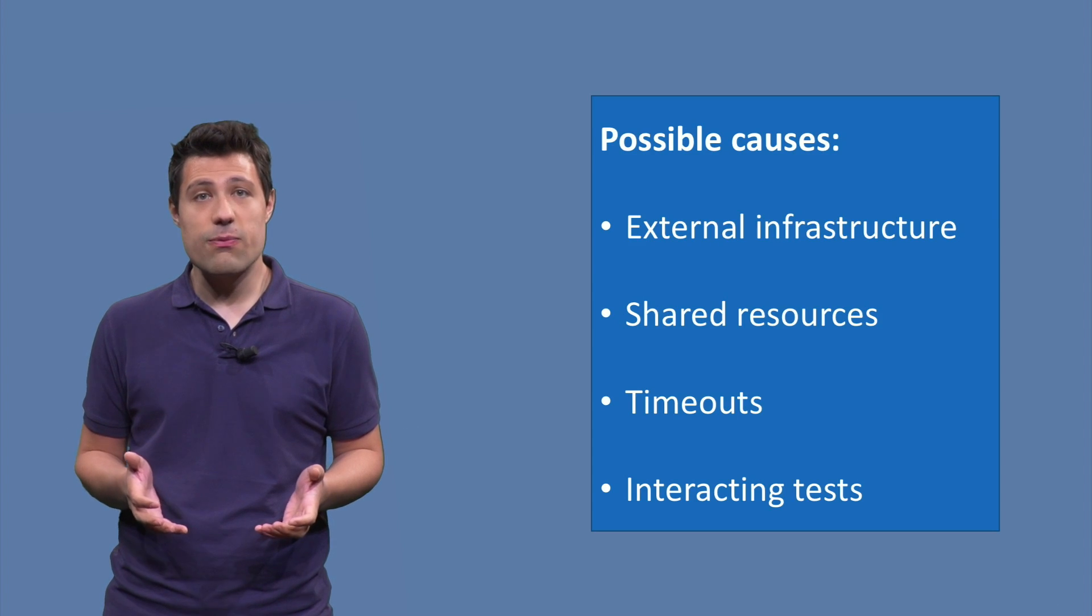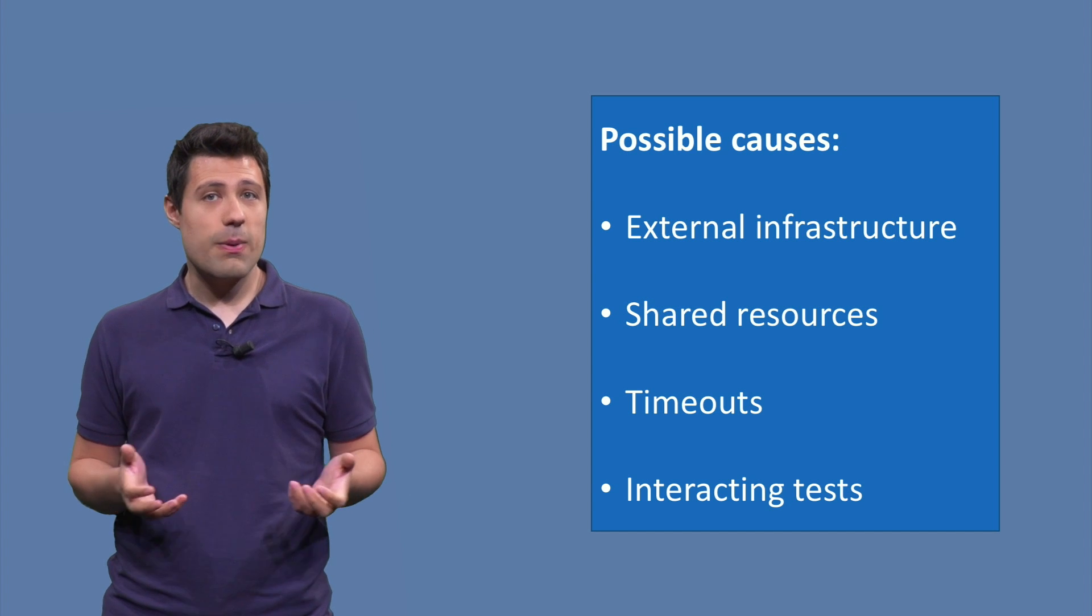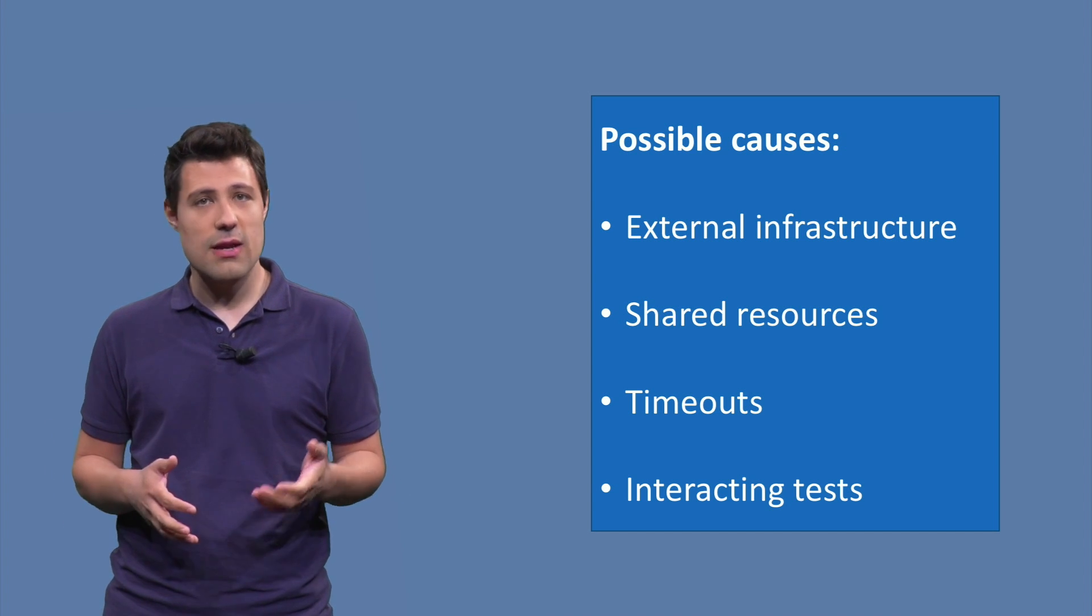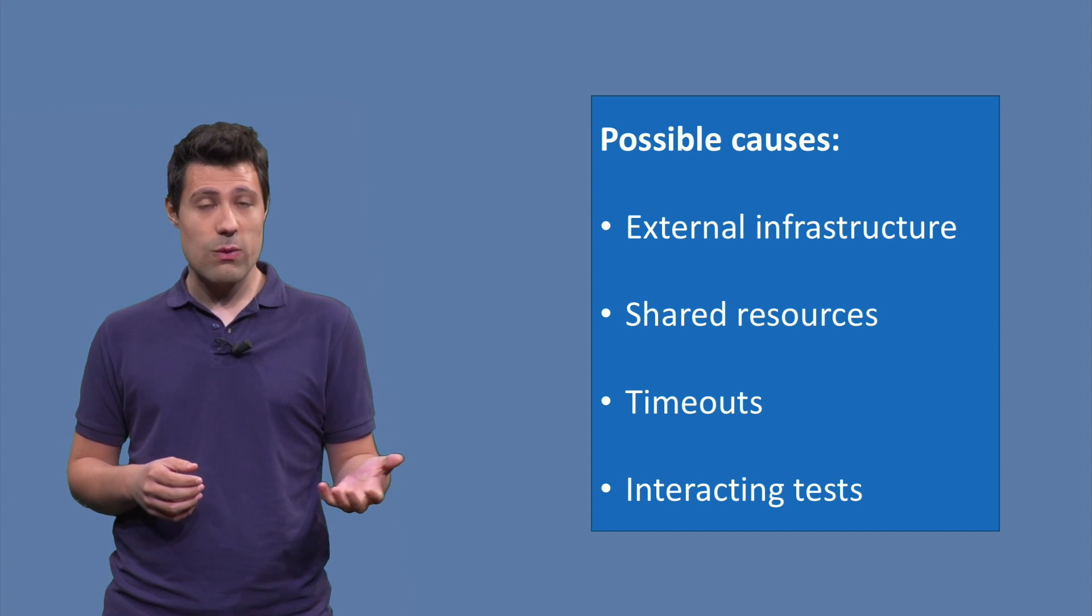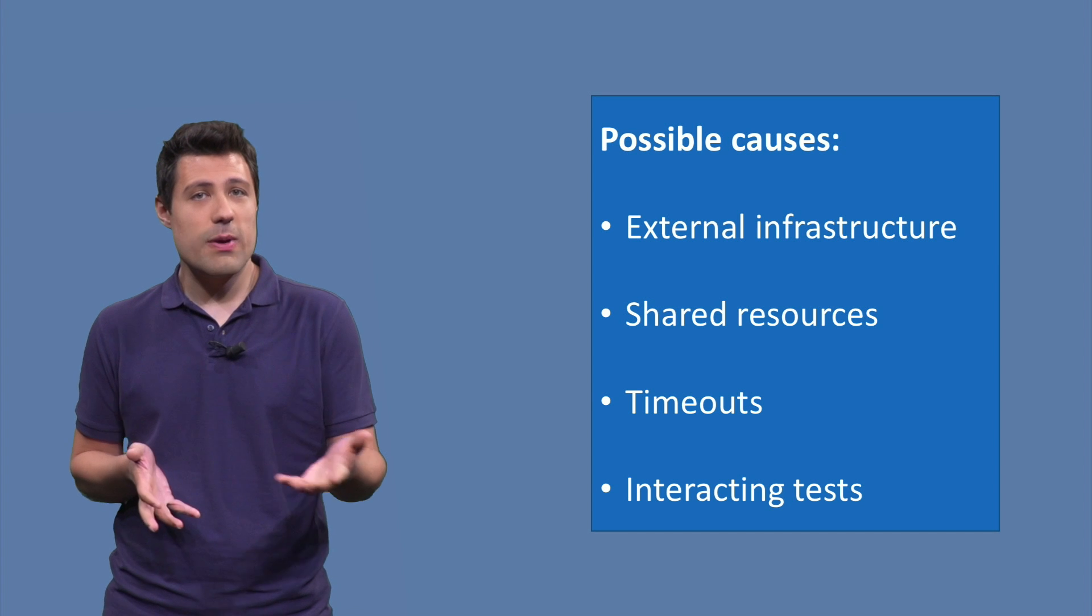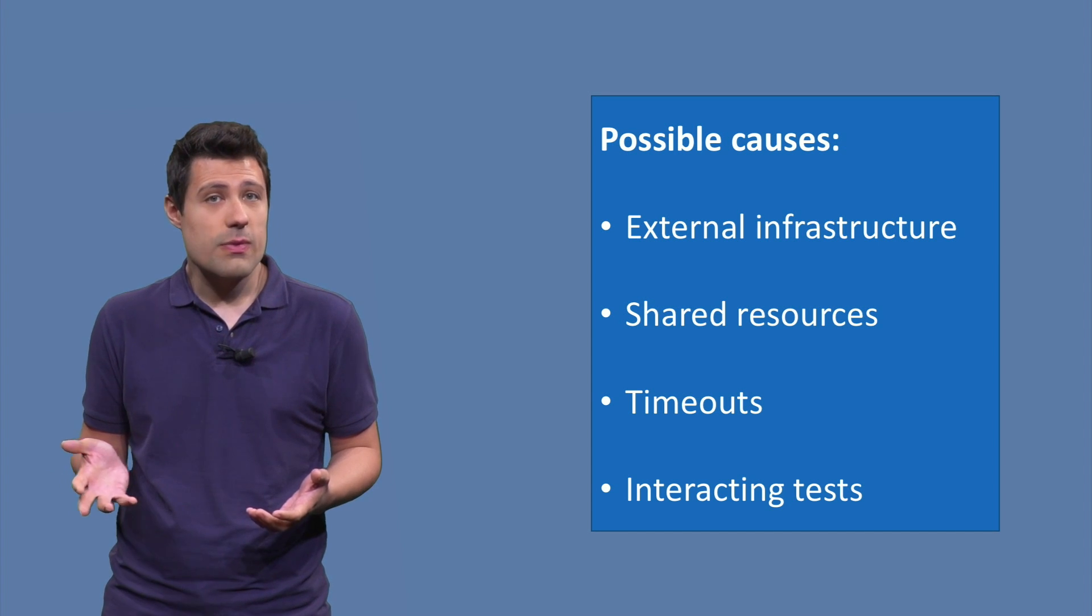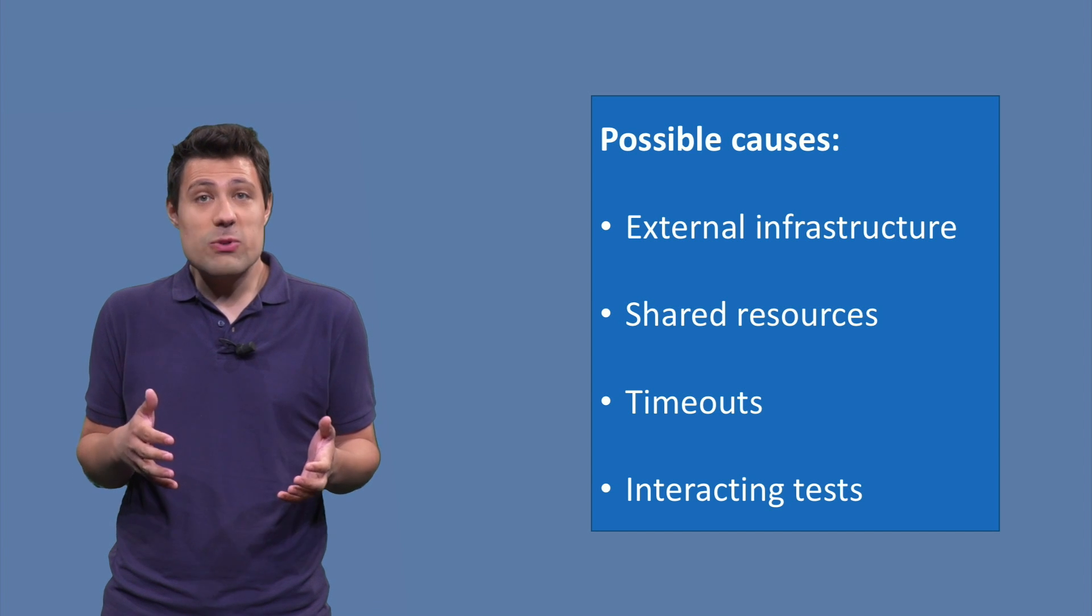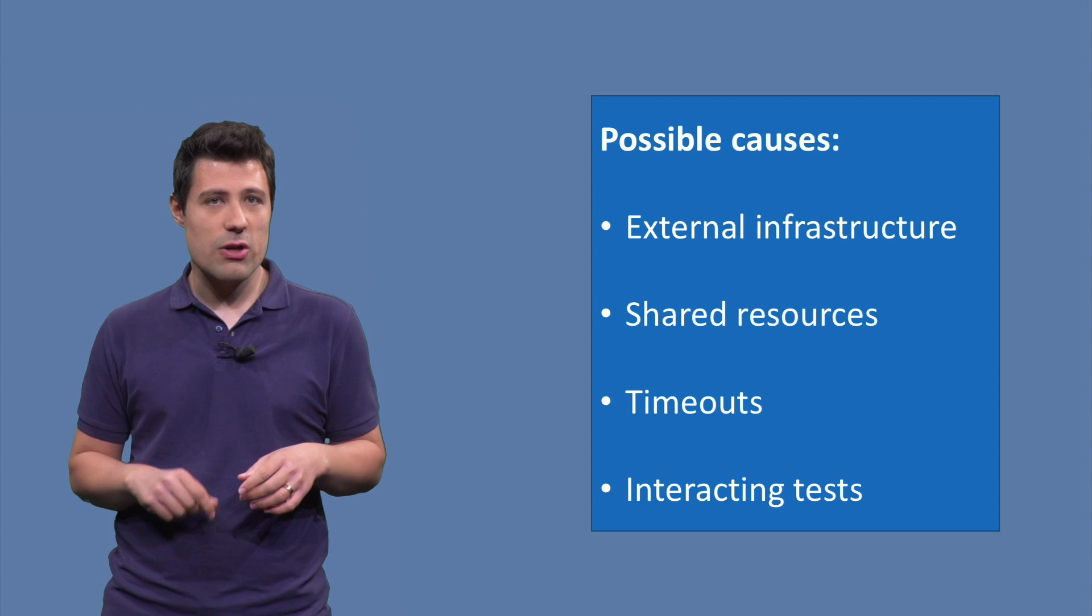And flaky tests can happen for many different reasons. For example, you have a test that depends on an external infrastructure like a database or a web service. And when the database is running and the web service is available, the test passes. But as soon as the database is off, the test fails. So the test keeps passing and failing according to the availability of the external infrastructure.